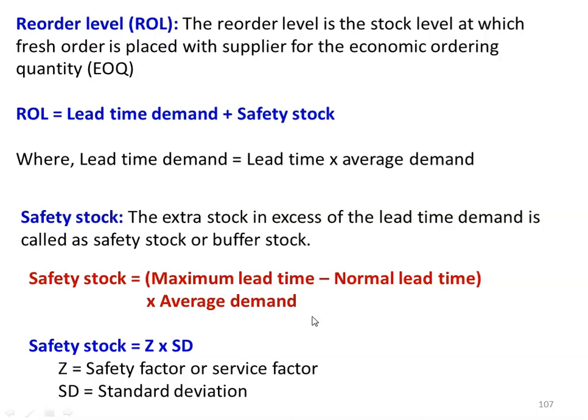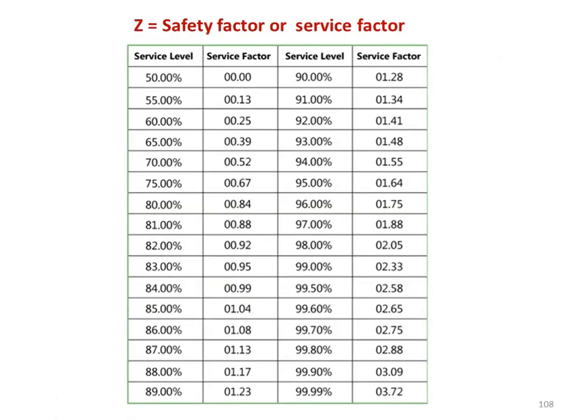Safety stock is calculated as: (maximum lead time minus normal lead time) multiplied by average demand. Alternatively, safety stock equals Z into SD, where Z is the service or safety factor and SD is the standard deviation. The service factor is taken from a standard table based on service level — for example, at 100% service level Z is 3.72, and at 80% service level Z is 0.84.